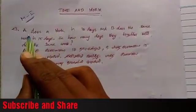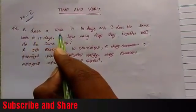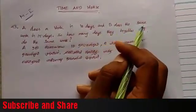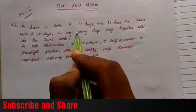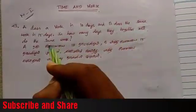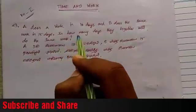Model 1: A does work in 10 days and B does the same work in 15 days. How many days will they together take to complete the same work?